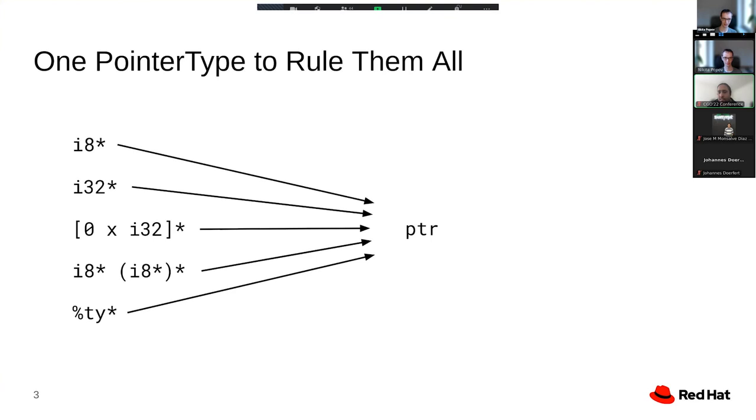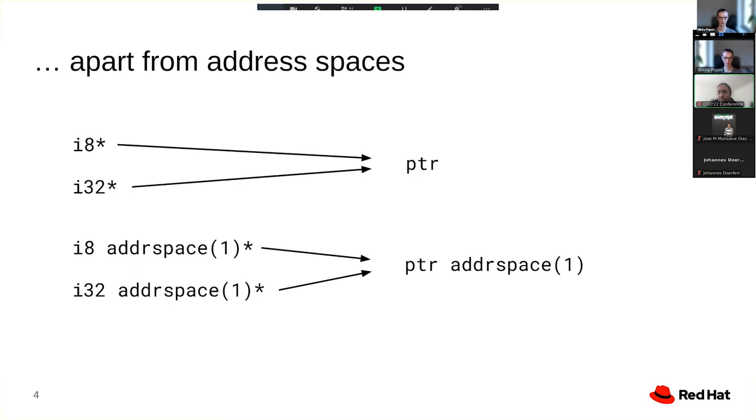This is not strictly true, because we still have the concept of address spaces. We do need to distinguish address spaces, because address spaces can have different representation, like different pointer sizes, different index sizes, and generally different semantics. But what opaque pointers do is to say that there is only a single pointer type for each address space.